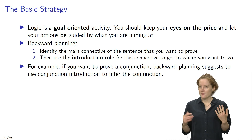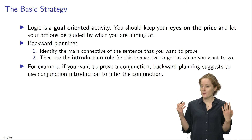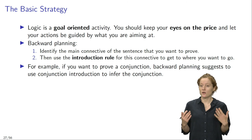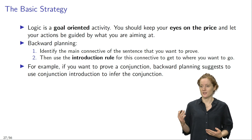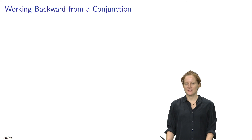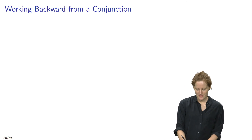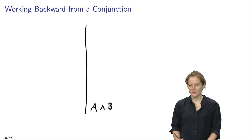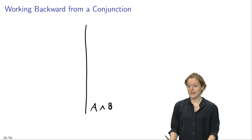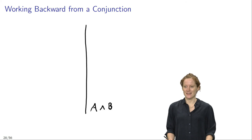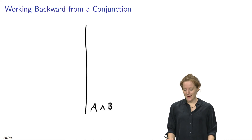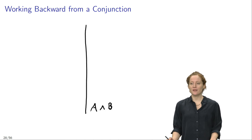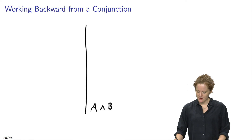For example, if you want to prove a conjunction, backward planning suggests to use conjunction introduction to infer this conjunction. Suppose we have a proof and we want to establish a conjunction, say A and B. Backward planning suggests identifying the main connective of the sentence — that's a conjunction — and then using the corresponding introduction rule, which in this case would be conjunction introduction.